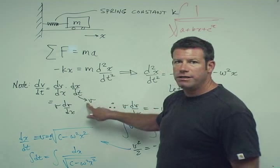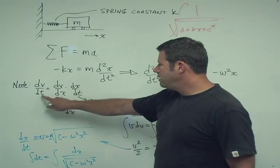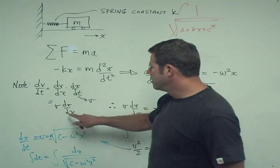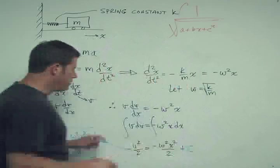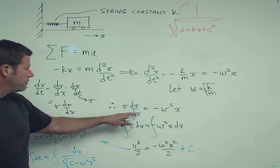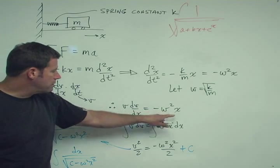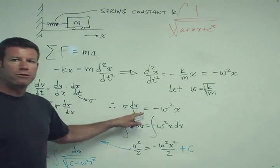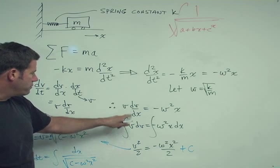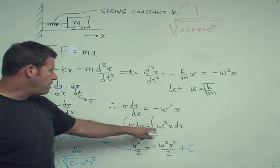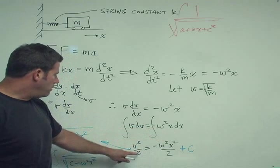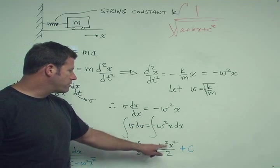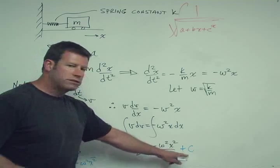So you say dv dt is the same as dv dx times dx dt. Well, dx dt we know is v. So then dv dt we can rewrite as v dv dx. So now we can say v dv dx equals minus w squared x, and now we have a separable differential equation. So we integrate the v dv part and we integrate the minus w squared x dx. And we get v squared over 2 equals minus w squared x squared over 2 plus c.